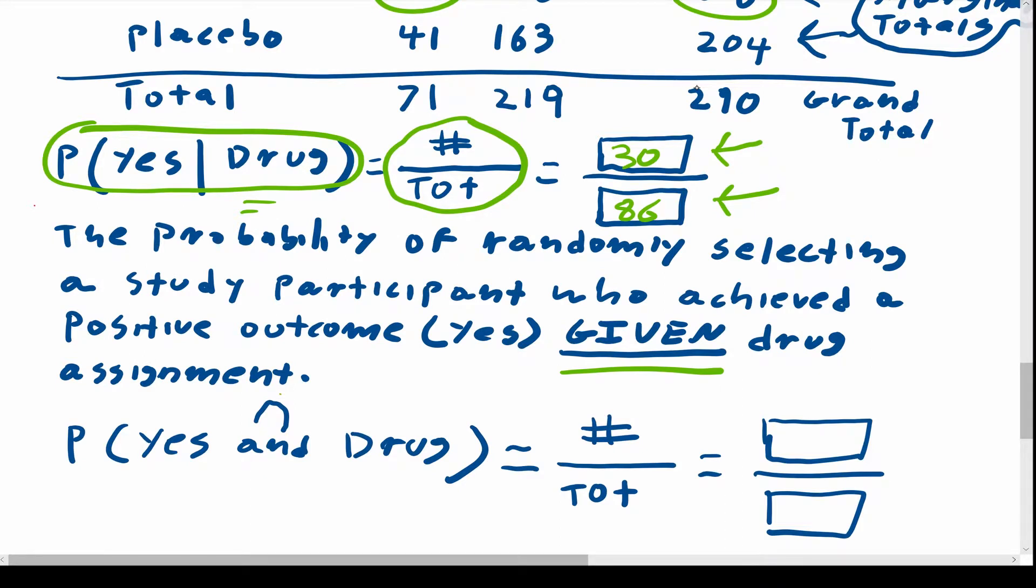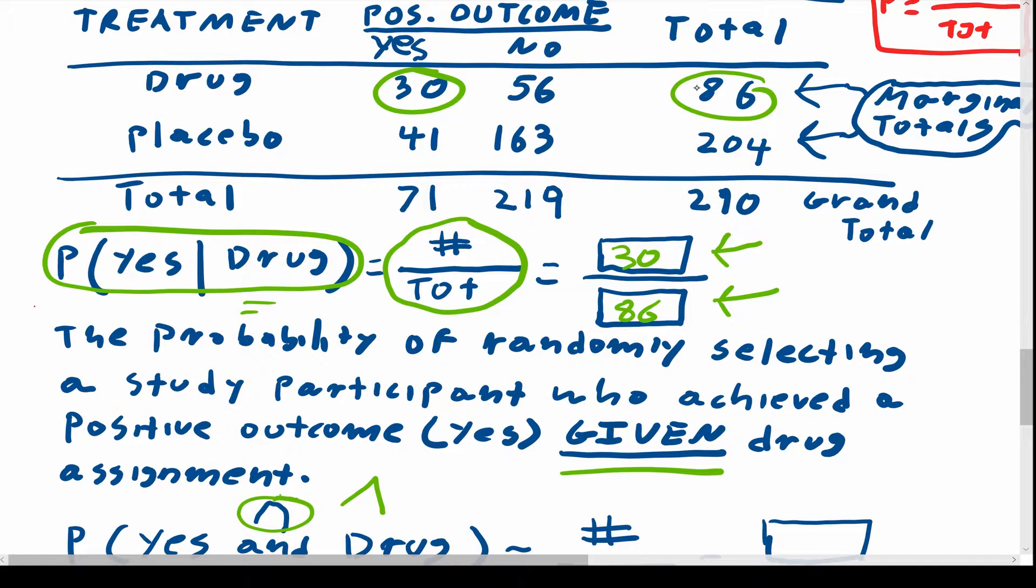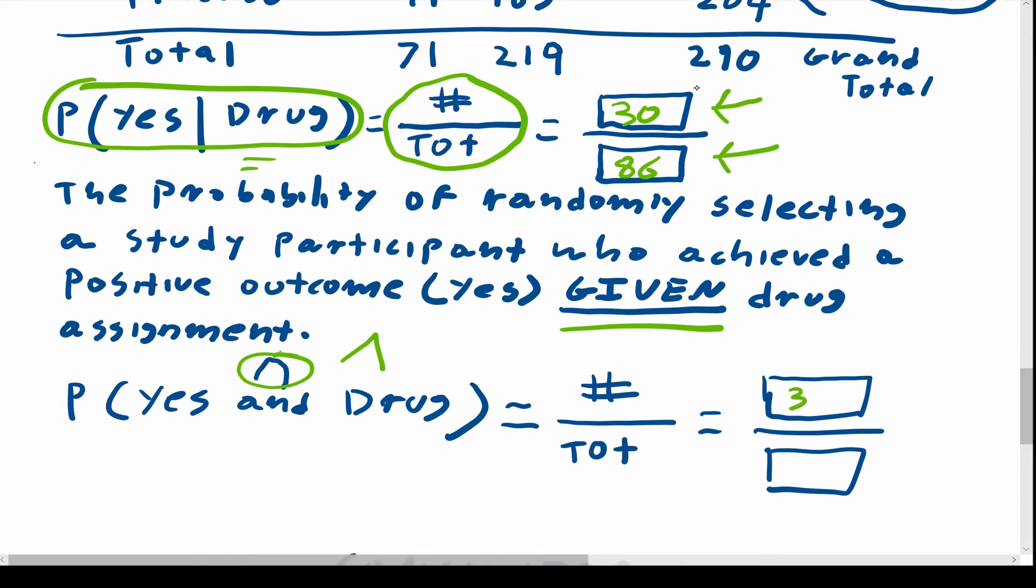So let's see if we can contrast this with the probability of yes and drug. And you'll see some different symbols for the word and in different contexts. Sometimes you will see this intersection symbol. And in logic, you'll see this symbol for and. I actually prefer and because it's more versatile, but it's your choice. So the probability of yes and drug, well, the total is actually different here. This would be like the probability of randomly reaching your hand into a jar with 290 marbles. But there are only four types of marbles. Each marble is labeled either drug or placebo, and either yes or no. So there are four types of marbles. And out of those 290 marbles, only 30 of those marbles say drug and yes. So this is actually 30 over 290.